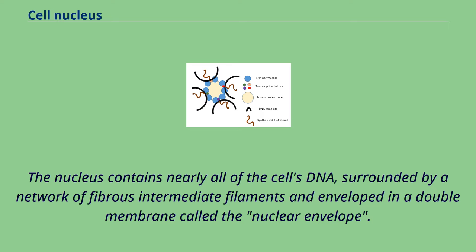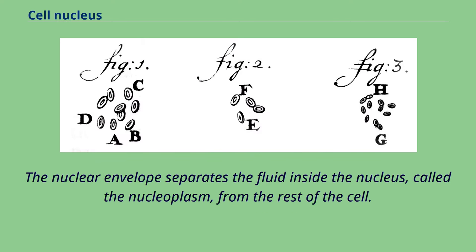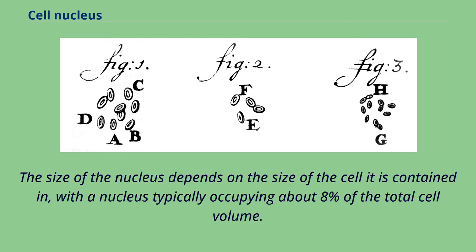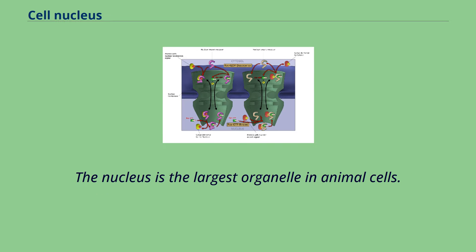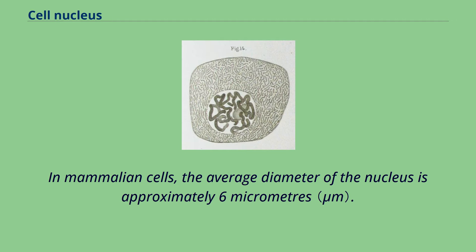The nucleus contains nearly all of the cell's DNA, surrounded by a network of fibrous intermediate filaments and enveloped in a double membrane called the nuclear envelope. The nuclear envelope separates the fluid inside the nucleus, called the nucleoplasm, from the rest of the cell. The size of the nucleus depends on the size of the cell it is contained in, with the nucleus typically occupying about 8% of the total cell volume. The nucleus is the largest organelle in animal cells; in mammalian cells, the average diameter is approximately 6 micrometers.